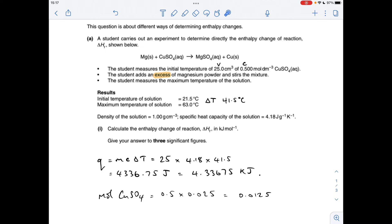Next thing we do is work out the moles of copper sulfate. Remember we said that was the limiting reagent. So concentration times volume in decimeters cubed, 0.0125 moles of CuSO4.